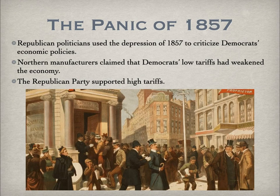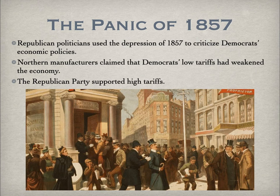The year 1857 saw a new panic — a new recession followed by a depression — called the Panic of 1857. Republican politicians would use the depression of 1857 to criticize Democrats' economic policies, as the Democrats were in power at this time. Northern manufacturers claimed that Democrats' low tariffs had weakened the economy and given an advantage to foreign industry over American industry. The Republican Party would support high tariffs to protect northern American industry, while the Democrats continued to support low tariffs to help and protect their southern allies.